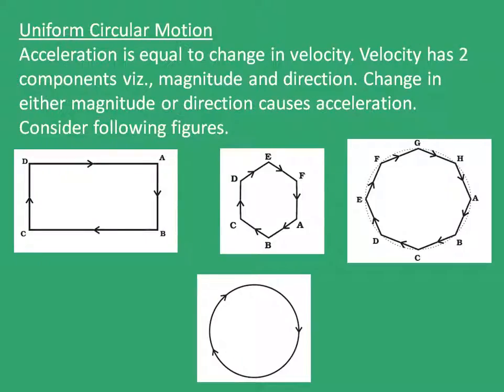Now let's move on to the last topic of this chapter: uniform circular motion. Acceleration is equal to change in velocity, and velocity has two components — magnitude and direction. A change in either magnitude or direction causes acceleration. Whenever we talk about velocity or acceleration, we need to think about both magnitude and direction.